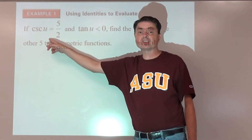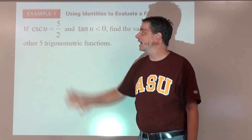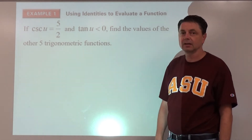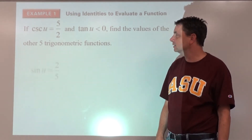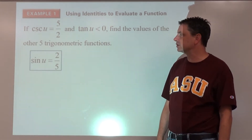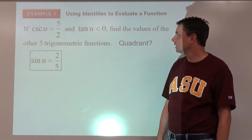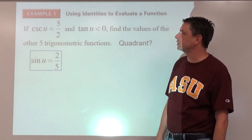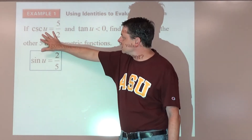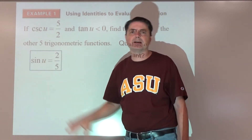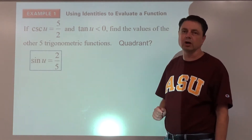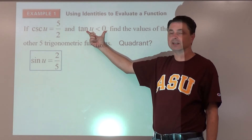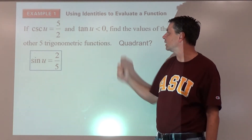Probably the easiest to find is sine. Using the reciprocal identity, sine of u equals two-fifths. To find the others, we need to know the quadrant. Since sine is positive, we're in quadrant one or two. Since tangent is negative, we're not in quadrant one — so we're in quadrant two.